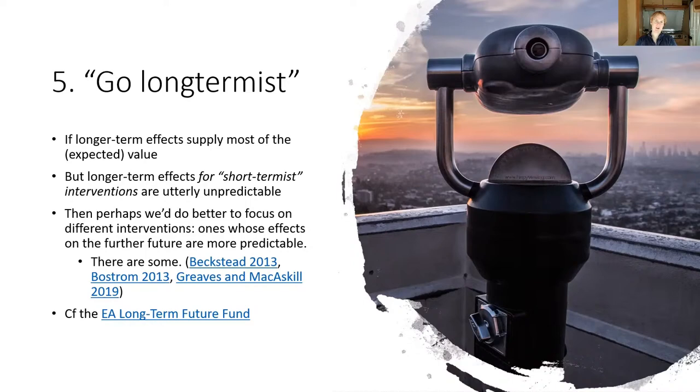Considerations of cluelessness are often taken to be an objection to long-termism because, of course, it's very hard to know what's going to beneficially influence the course of the very far future on timescales of centuries and millennia. Again, we still have the point that we can't do randomised controlled trials on those timescales. However, what my own journey through thinking about cluelessness has convinced me tentatively is that that's precisely the wrong conclusion and, in fact, considerations of cluelessness favour long-termism rather than undermining it.